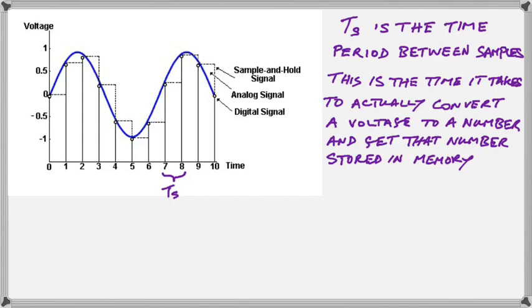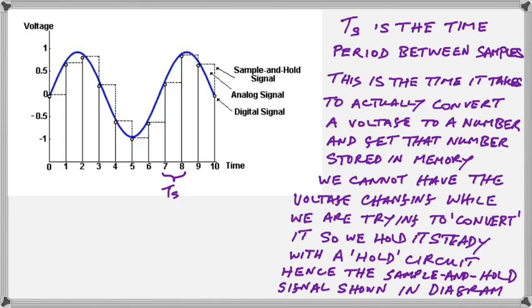It actually takes a small amount of time to convert the voltage to a number and to get that number stored in memory. We cannot have the voltage changing during this time interval because that's when we're trying to actually convert it. So, how can we measure something that's changing? We have to hold it steady for a short while so that we can do the conversion and we require a hold circuit to actually freeze the voltage at that point in time until we can measure it and store it.